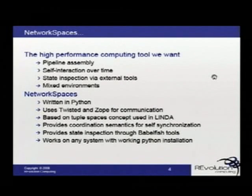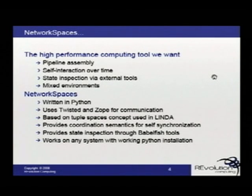So we created something called Network Spaces. It's written in Python and uses Twisted and Zope for its communication. It's based on the tuple spaces concept of Linda — so if you've used Linda Spaces, Jini, or Java Spaces, it uses that very same concept of communications. It provides its own coordination semantics for self-synchronization, so it handles all that itself. We can actually inspect the state of variables using the Babelfish tools that come in Zope, and it works on essentially any system that you can install Python and Twisted on.